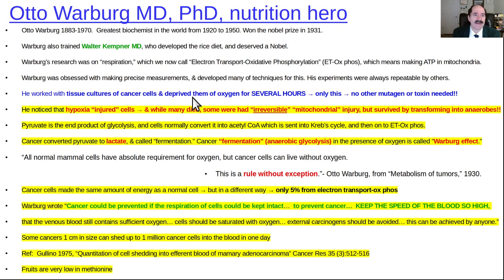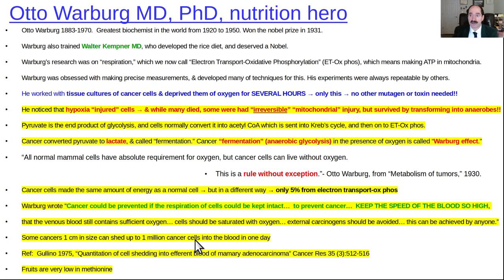Otto Warburg is a nutrition hero and Nobel Prize winner — perhaps the greatest biochemist of the 1900s — and he did all the foundational work on this. Other key points: you need a good functioning immune system. A one-centimeter diameter tumor can shed about a million cancer cells into the blood, and it's your immune system that clears those cells. So get your sleep, exercise, get sunshine for vitamin D3 — better absorbed through sun exposure than by mouth — and eat fruits, which are very low in methionine.